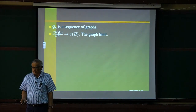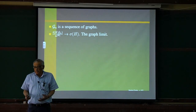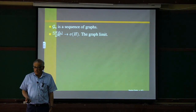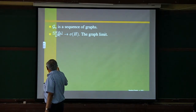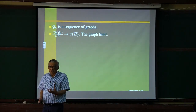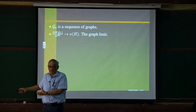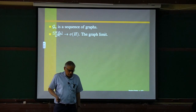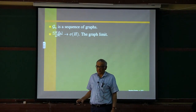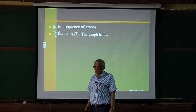I am assuming these limits exist. Since all these numbers are bounded by 1, if the limit doesn't exist I can choose a subsequence such that it does. There are only countably many finite graph shapes, so by the usual diagonalization procedure, given any sequence of graphs with sizes increasing to infinity, there is a subsequence for which all of these limits exist simultaneously.